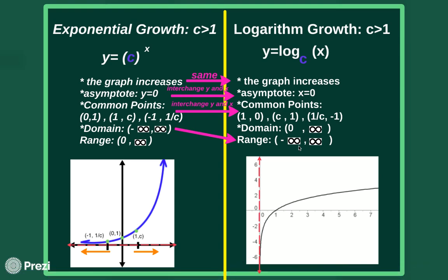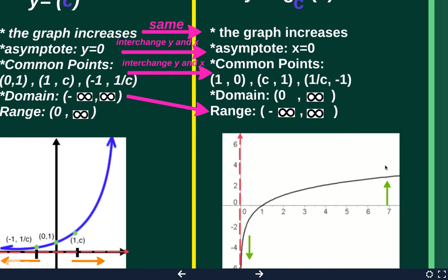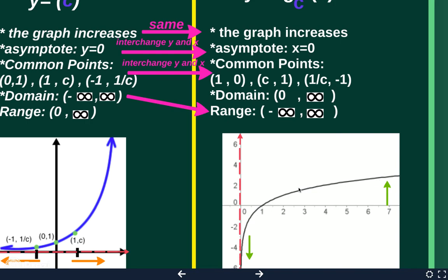And remember from when we did inverse functions, your domain and range also interchange. So let's see if that works in our graph. For the range, you ask how low does the graph go — this graph heads to negative infinity, downward forever. And then you ask how high does the graph go. Even though it doesn't look like it's getting that high up, it does steadily increase forever, so it will eventually reach infinity. The range goes to positive infinity.